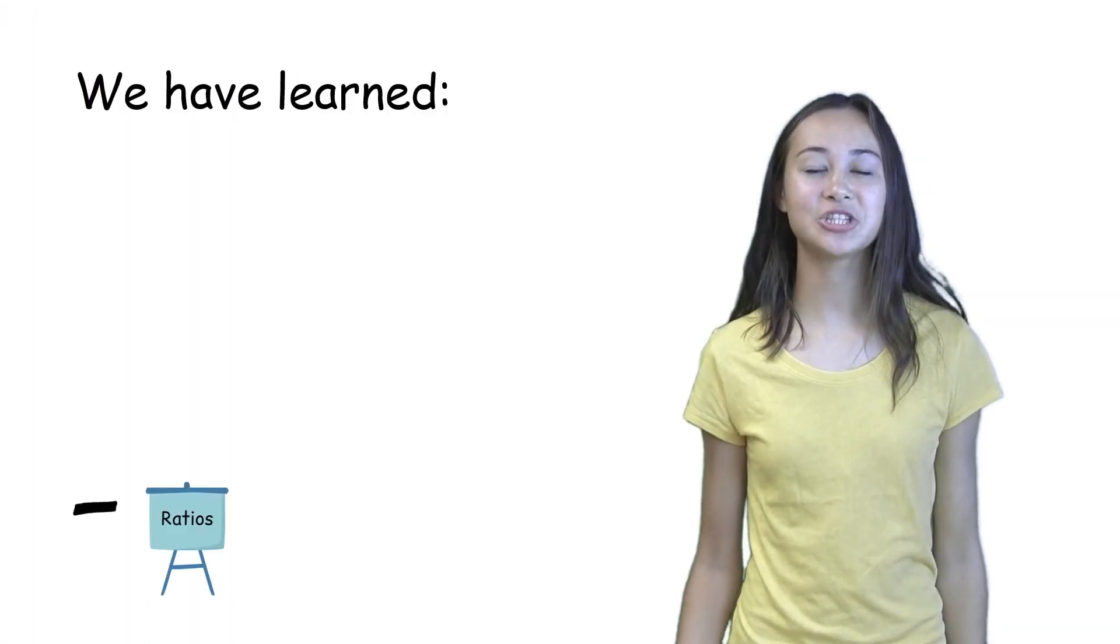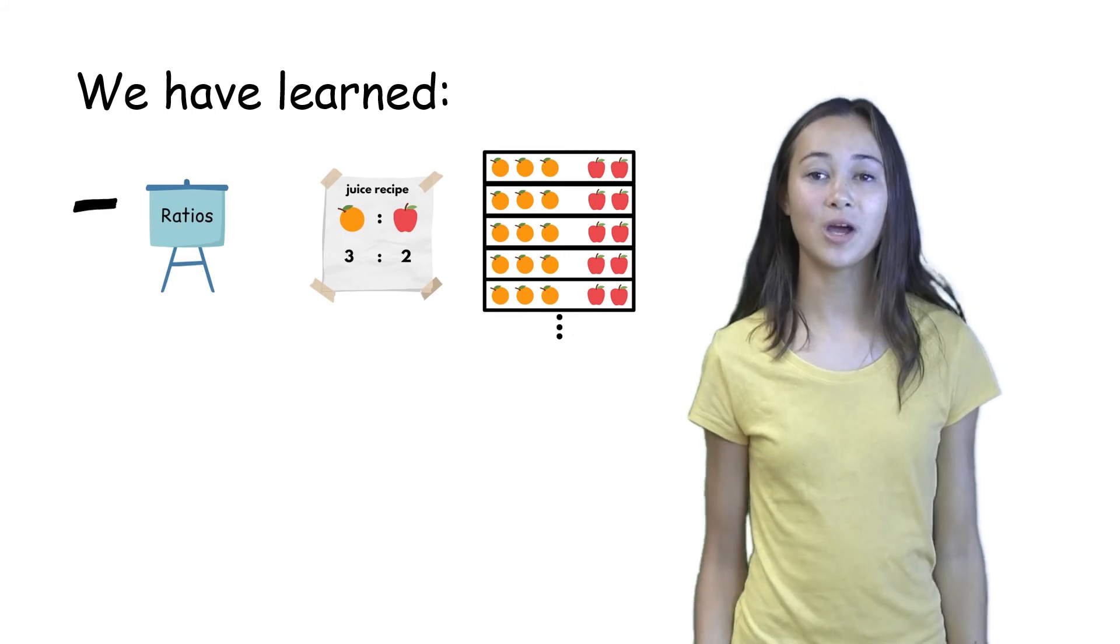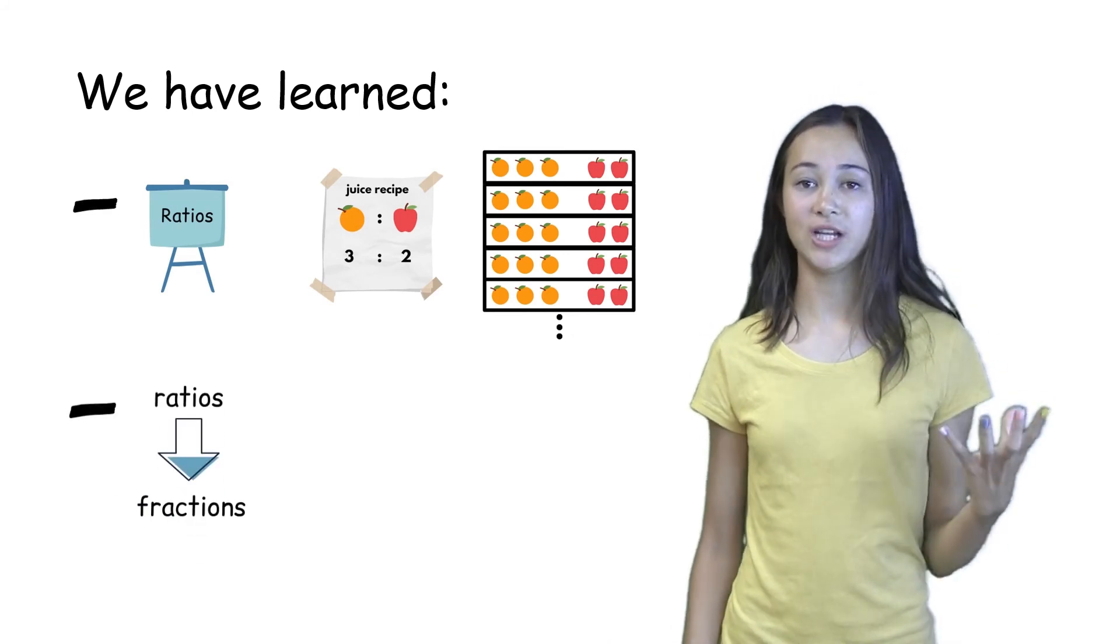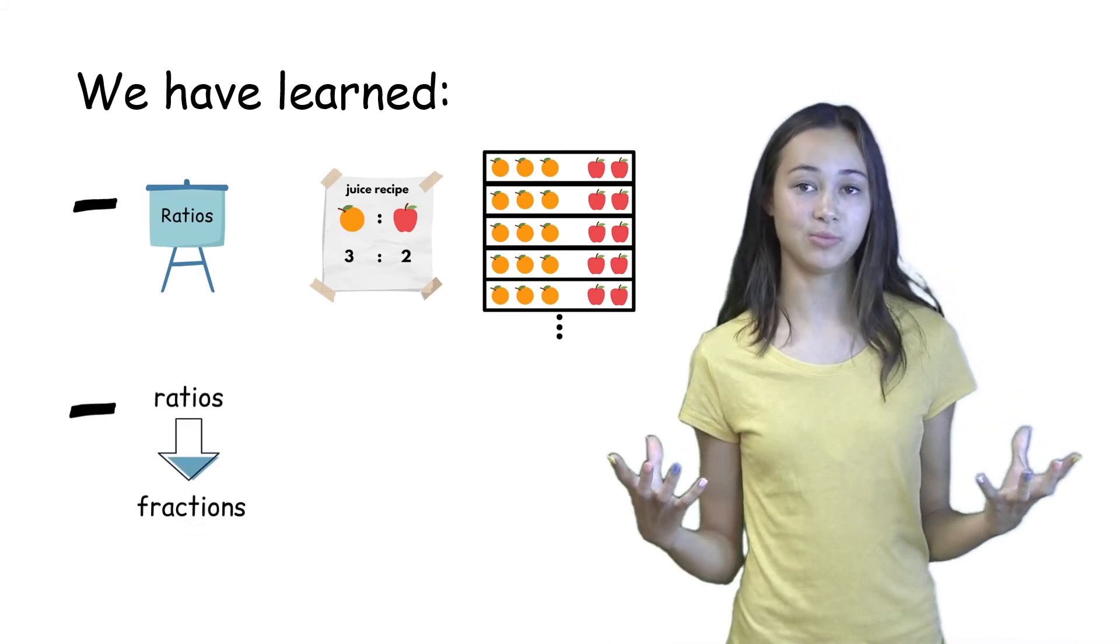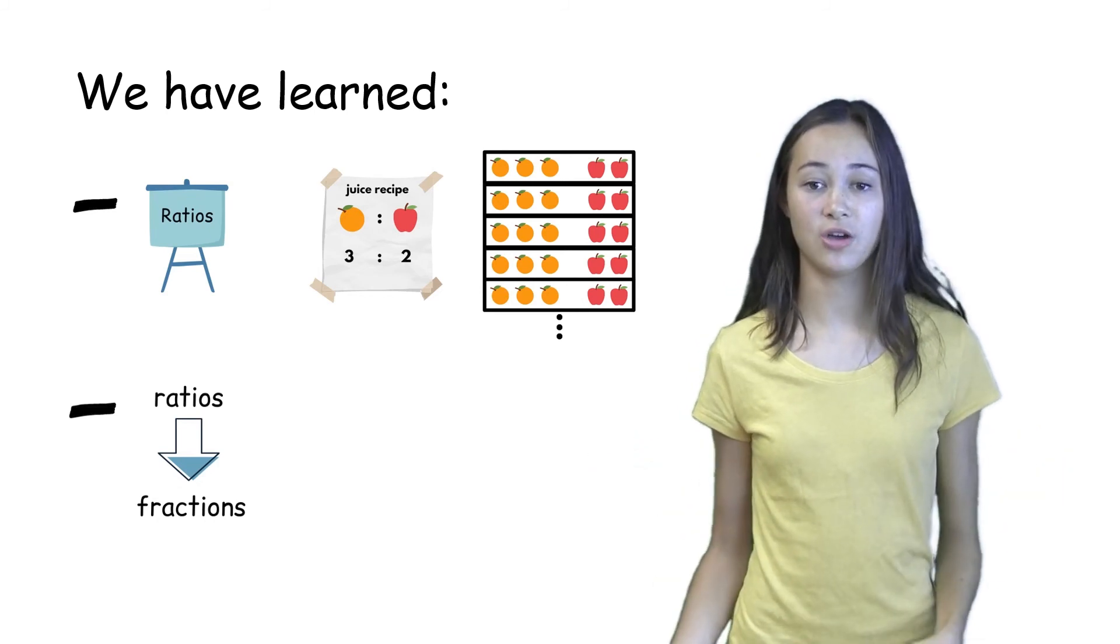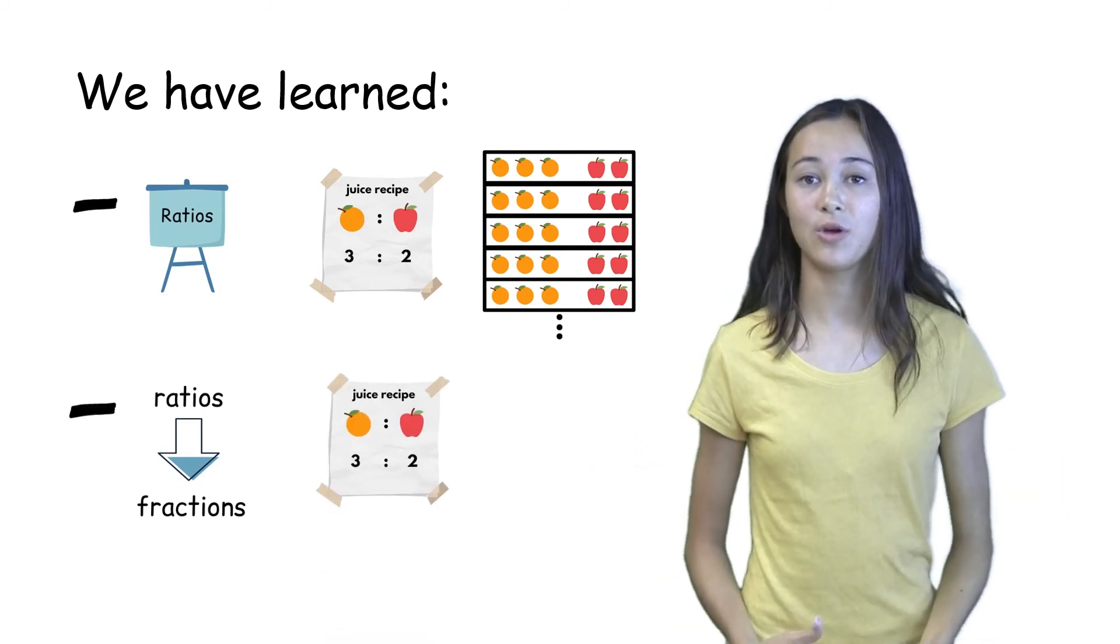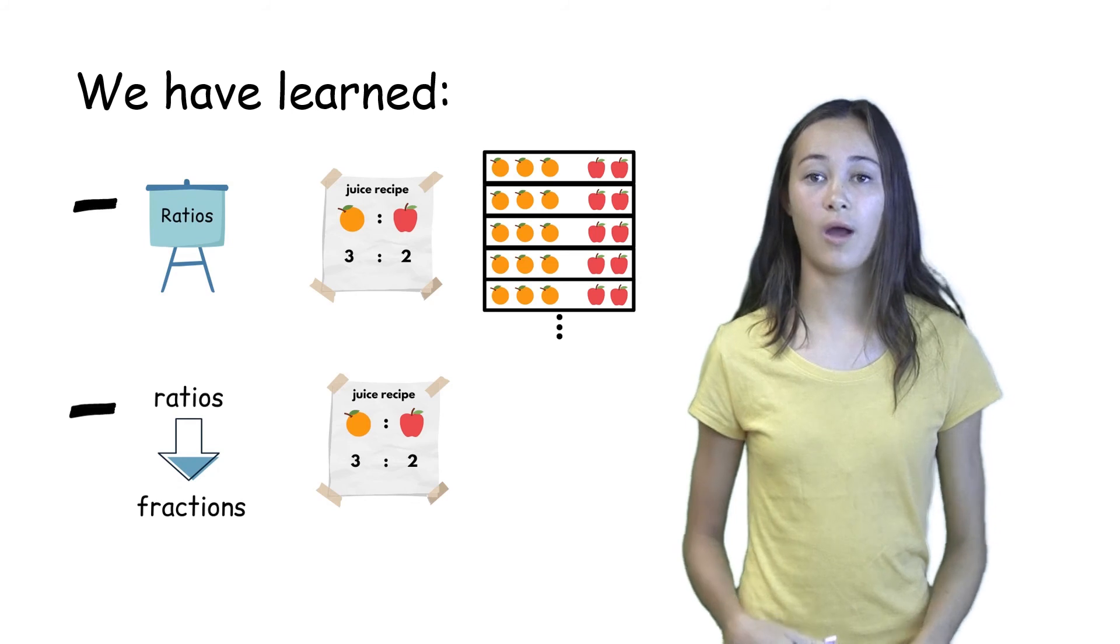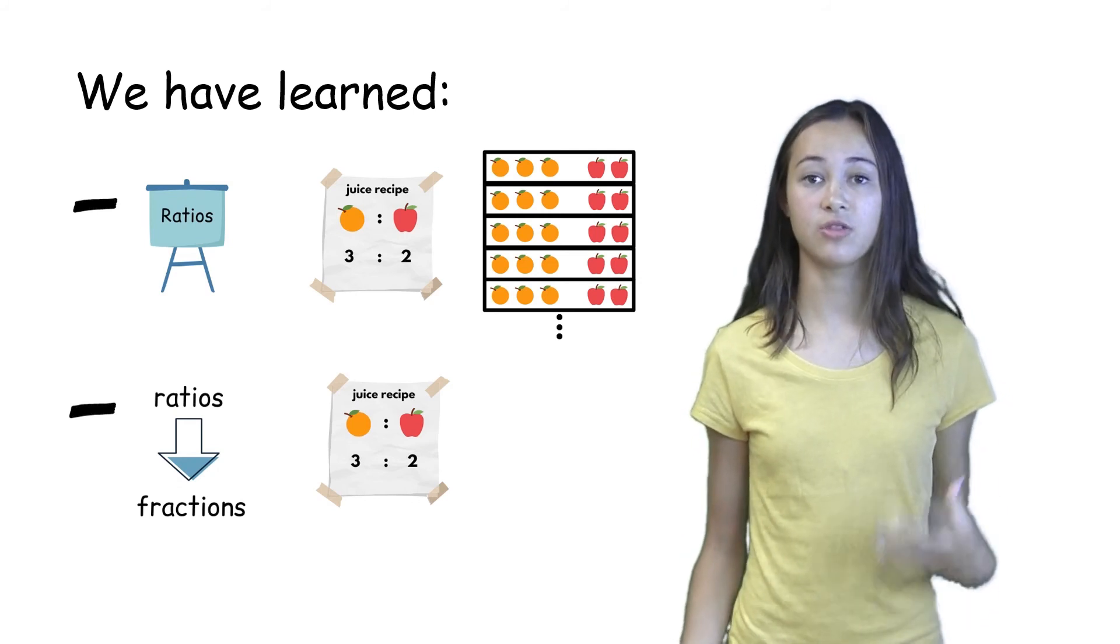Today we learned how to visually represent ratios. We also learned how to convert a ratio problem into a fraction problem to make it easier to solve. Like in today's example, we used a ratio of oranges to apples of 3 to 2.